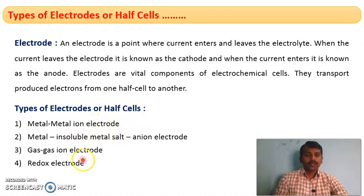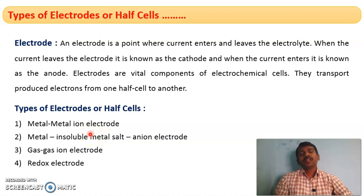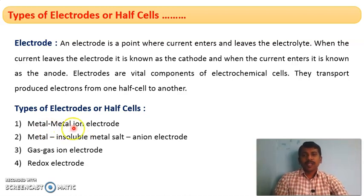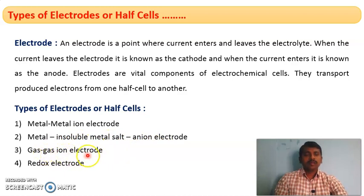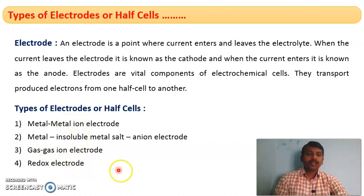They are of four types based on their composition. If we classify the electrodes or half cells based on their composition, we have four types: metal/metal ion electrode, metal insoluble metal salt anion electrode, gas/gas ion electrode, and redox electrode. Now we will discuss in detail about each type of electrode or half cell.